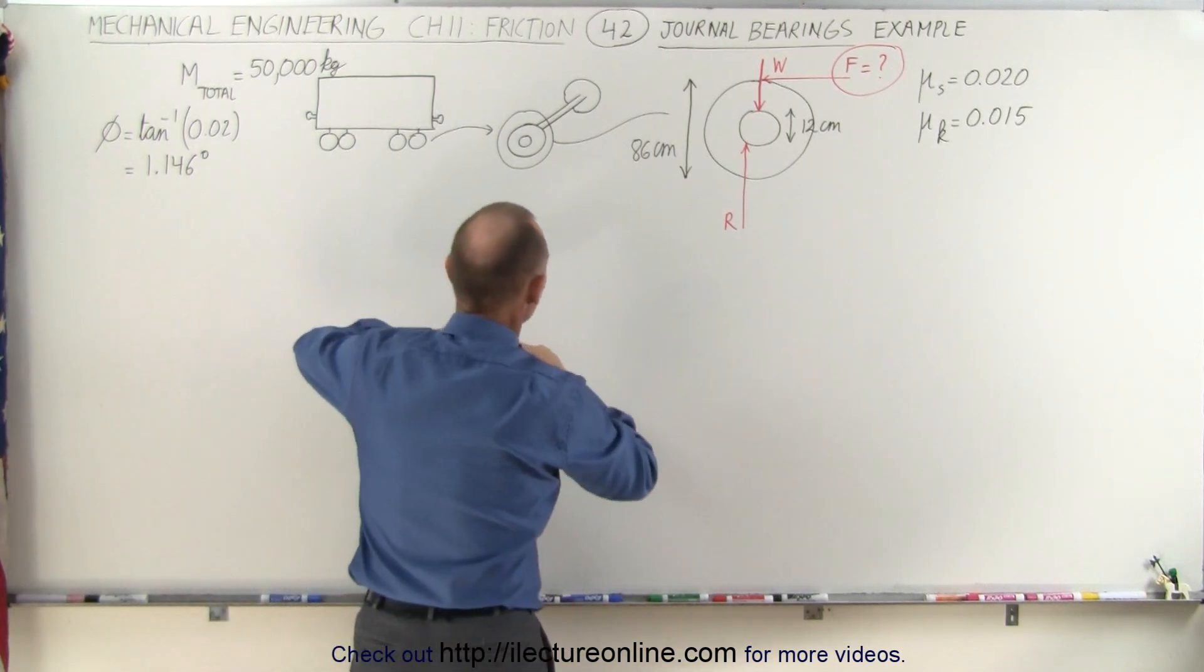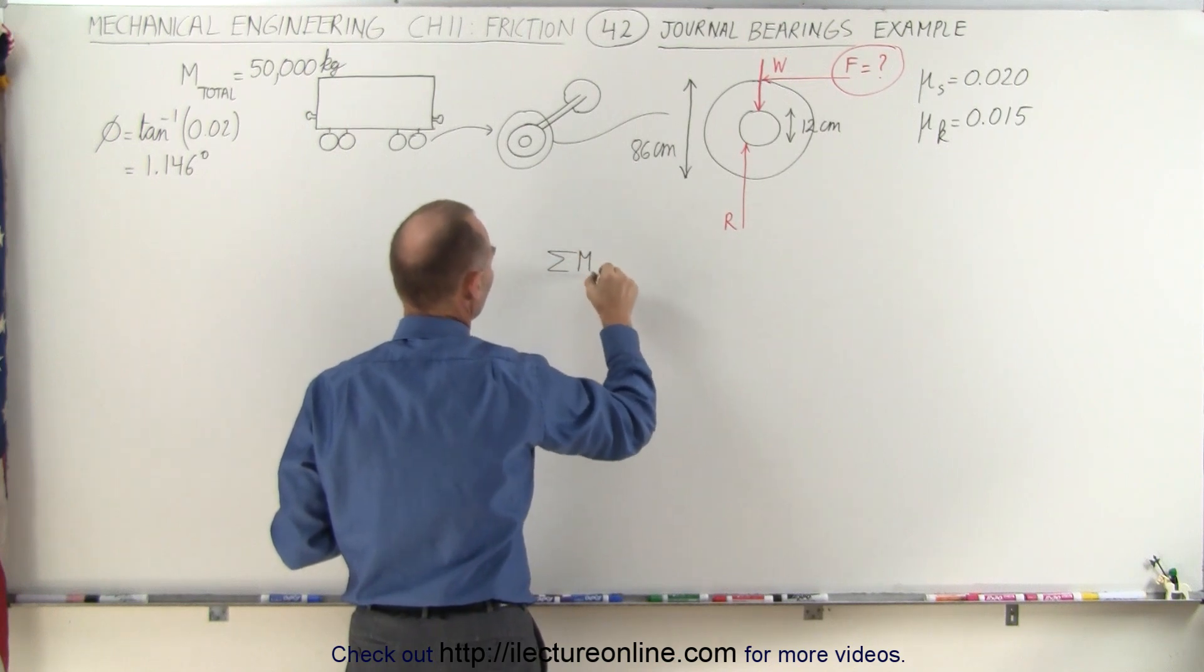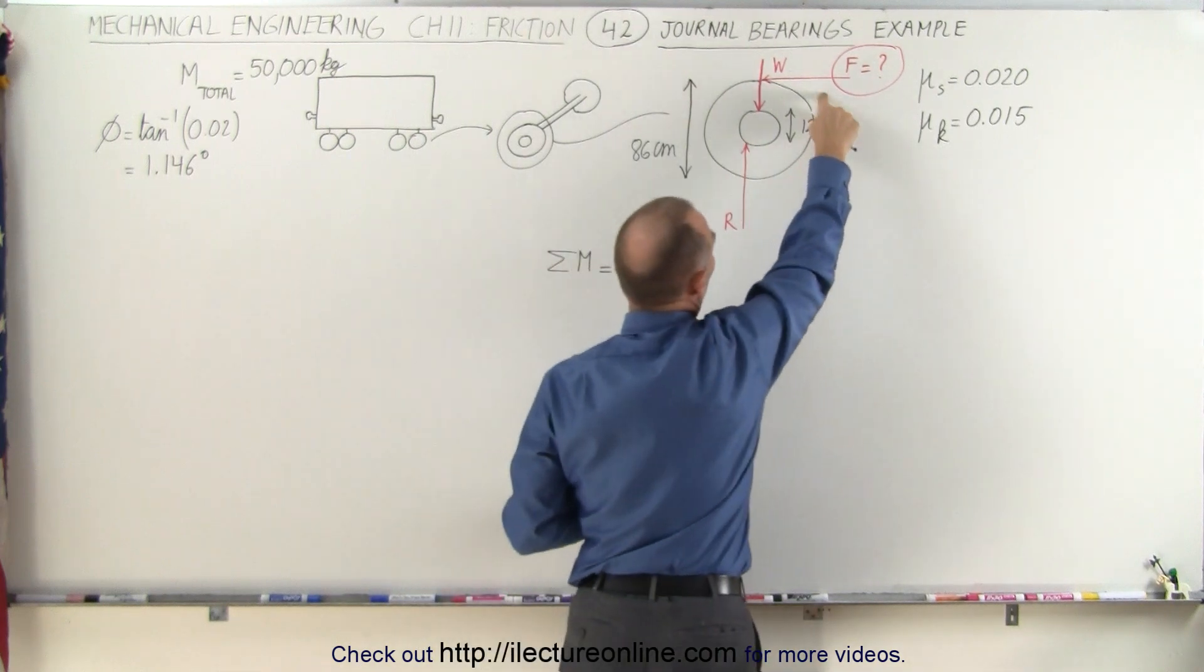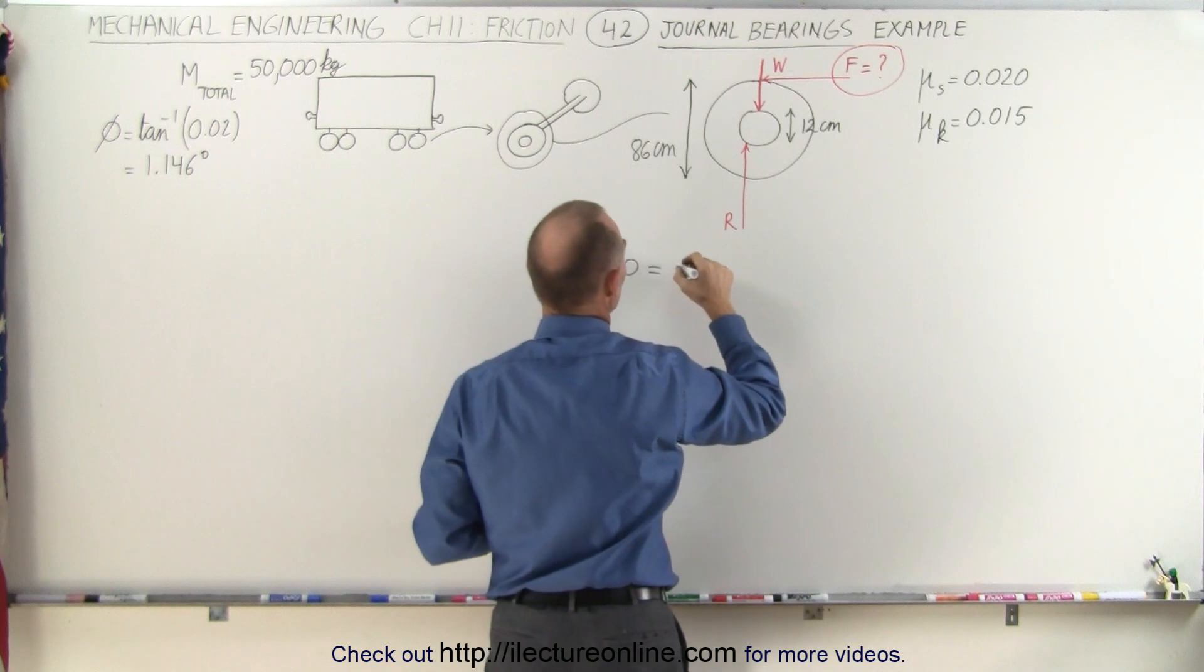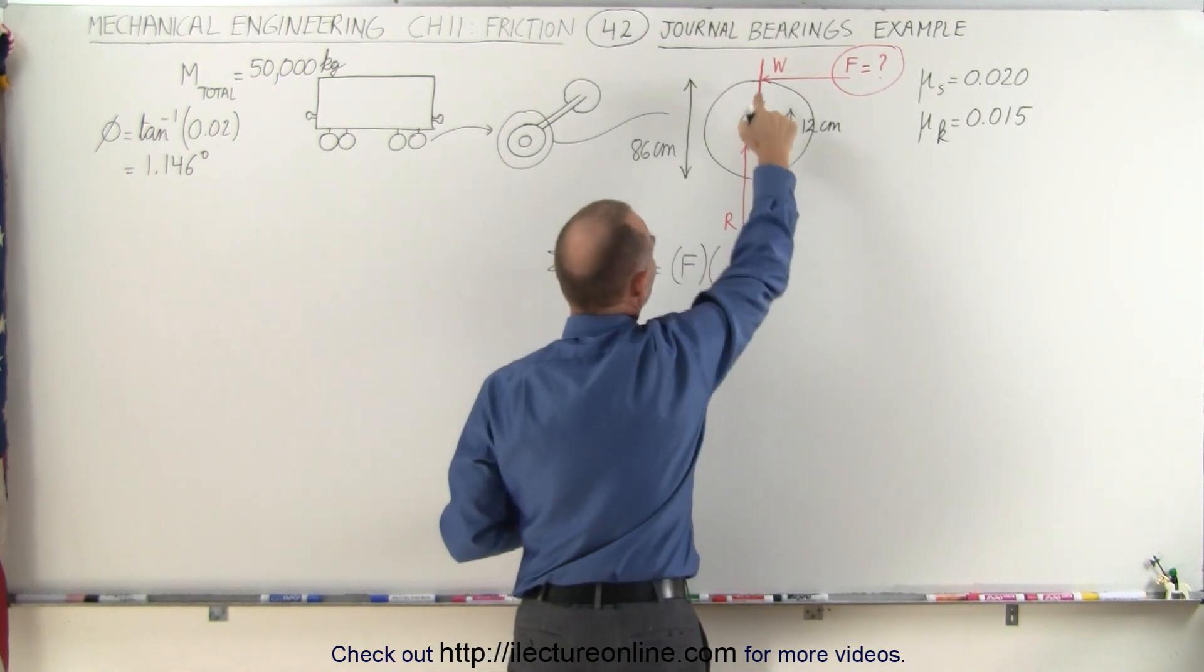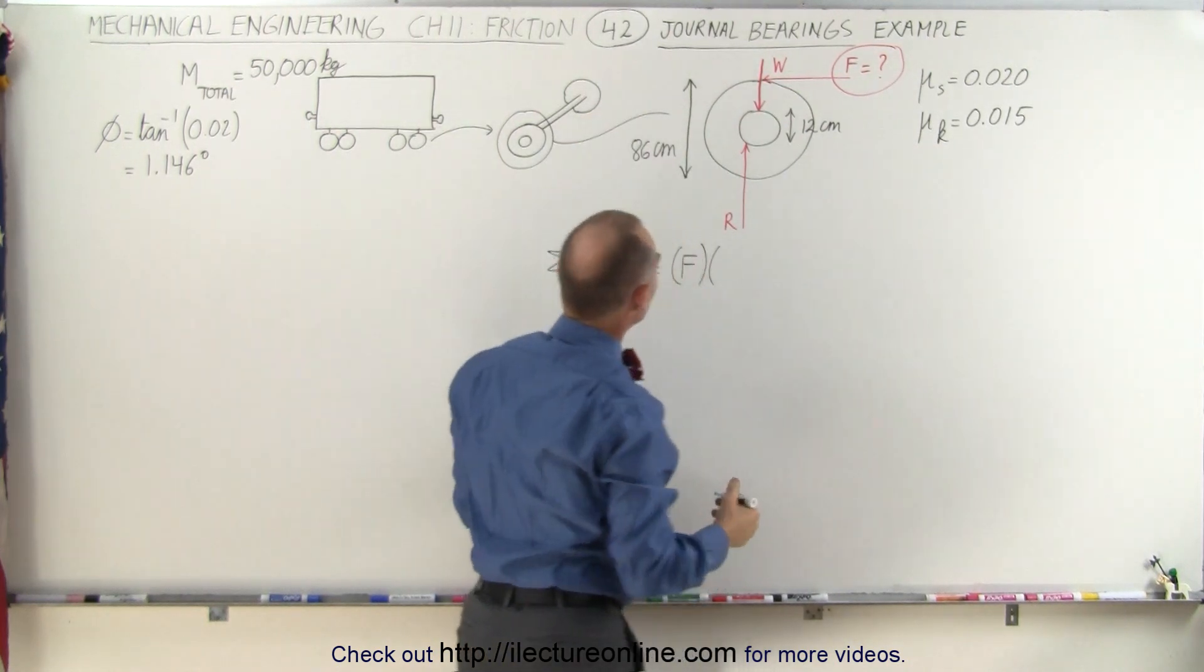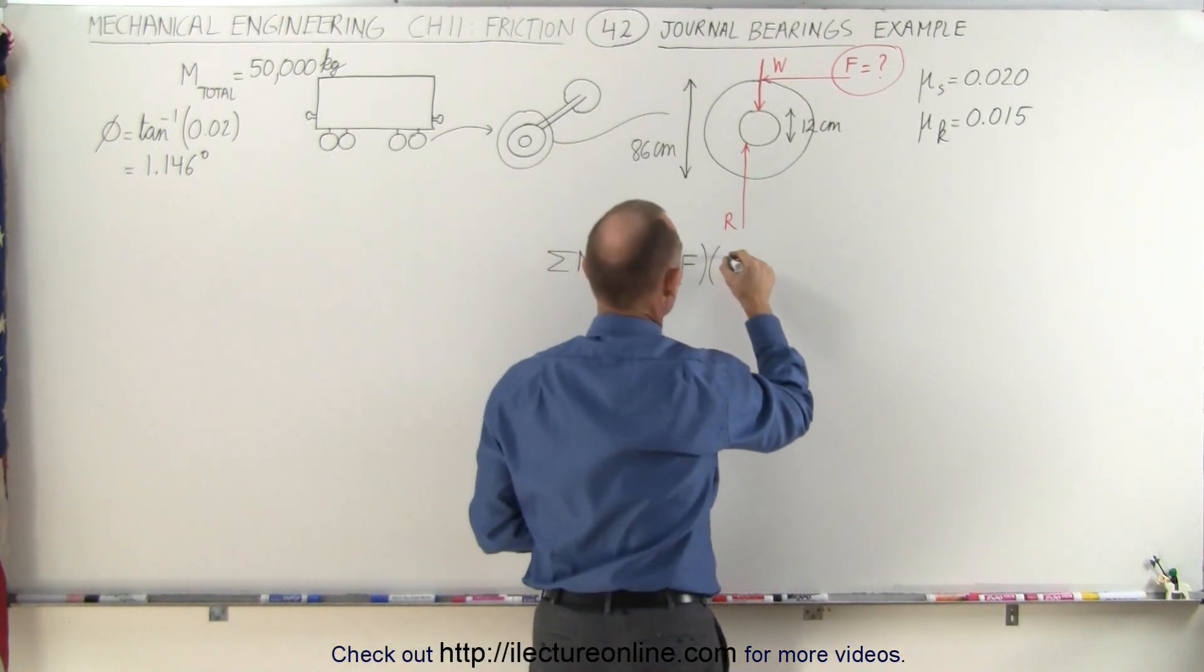So let's sum up the moments and see what we get. The sum of all the moments should add up to zero. And first of all, we have the force here, which causes a counterclockwise moment. That's a positive moment. So it would be a positive F times the radius from here to the edge of the wheel. It's an 86 centimeter wheel. That's 43 centimeters for the radius, which is 0.43 meters.